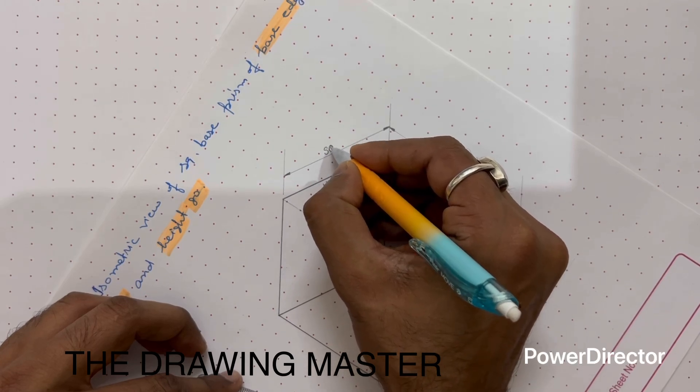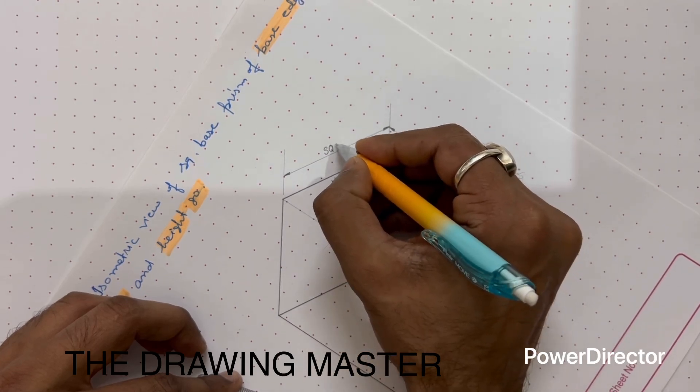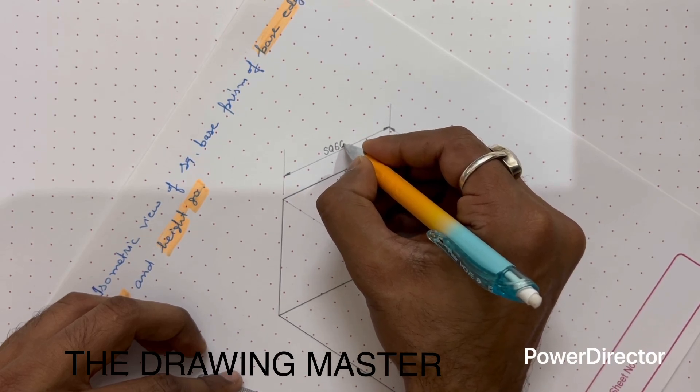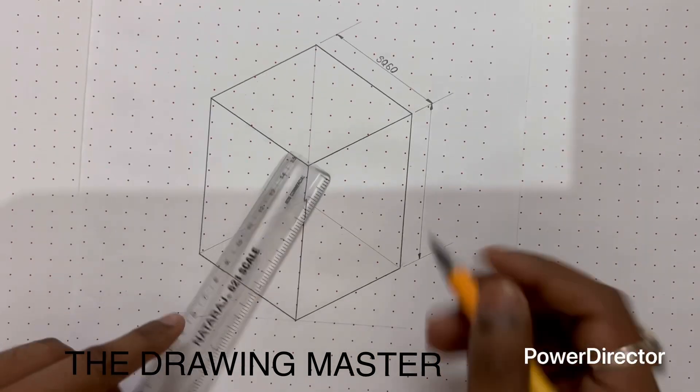As per aligned style, the dimension should be written above the line and perpendicular to dimension line. This is 60 and this height is 80.